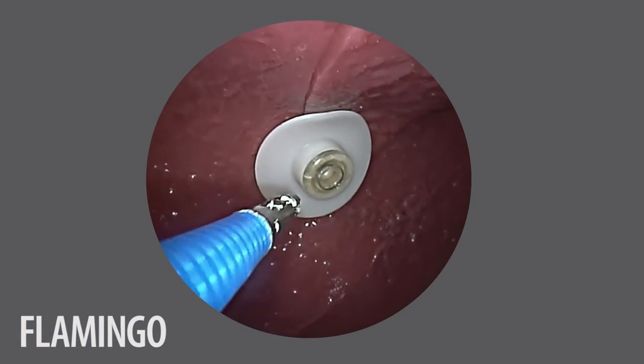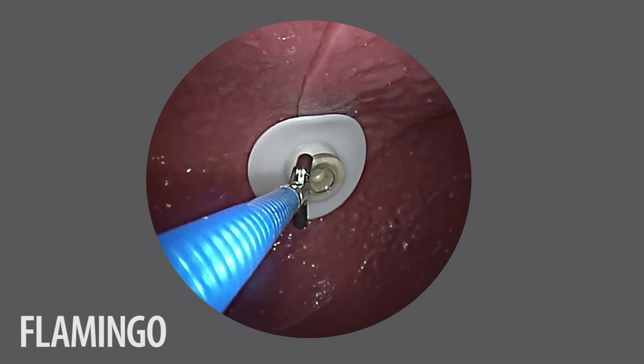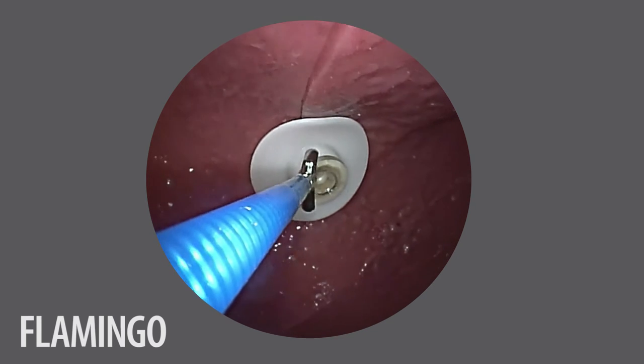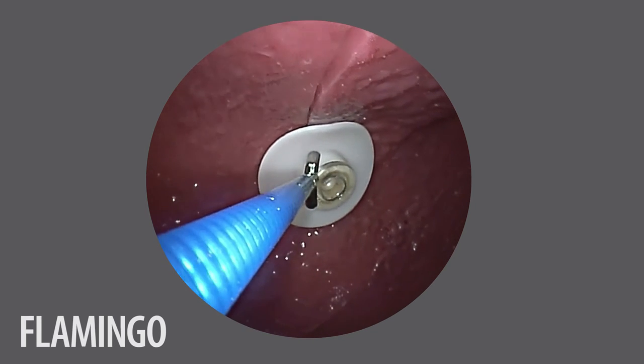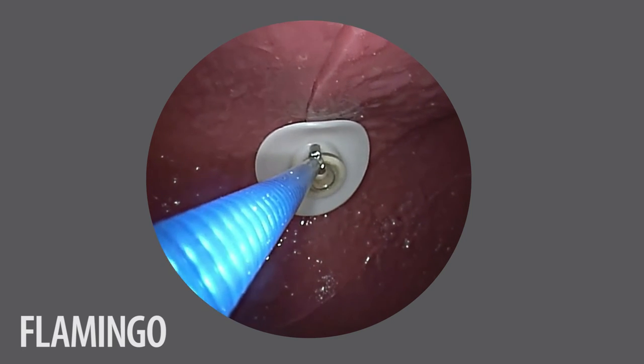Now, insert the forceps for foreign body removal into the stomach via the endoscope. Grasp the transparent ring of the retaining plate and remove the peg probe.